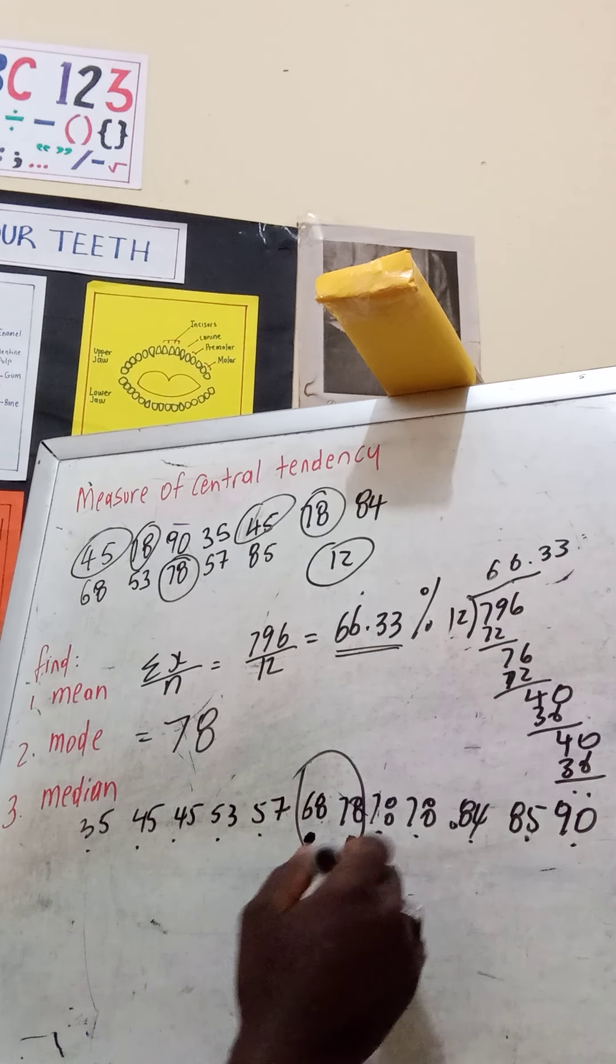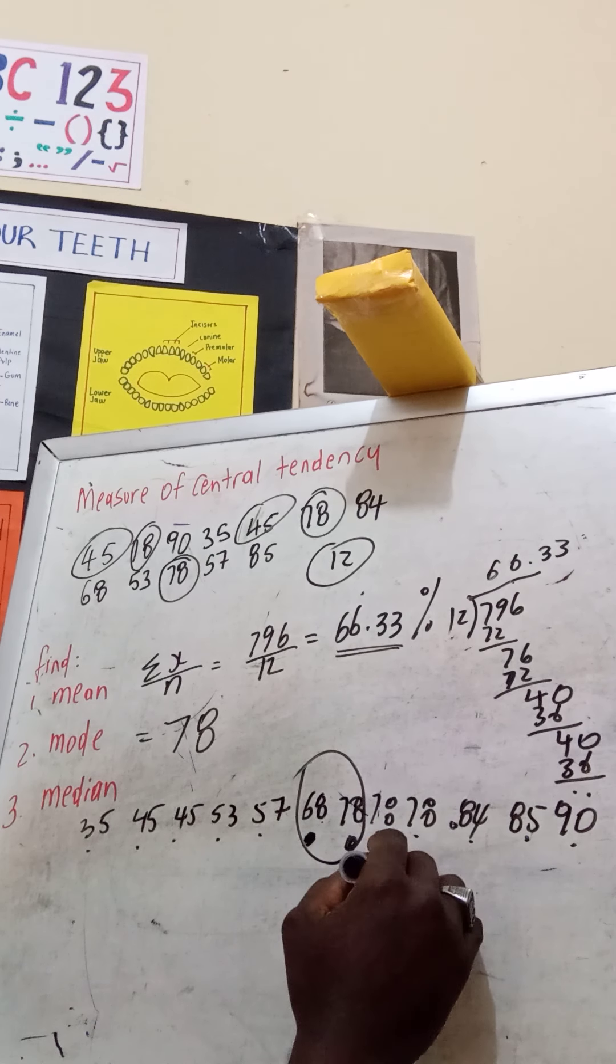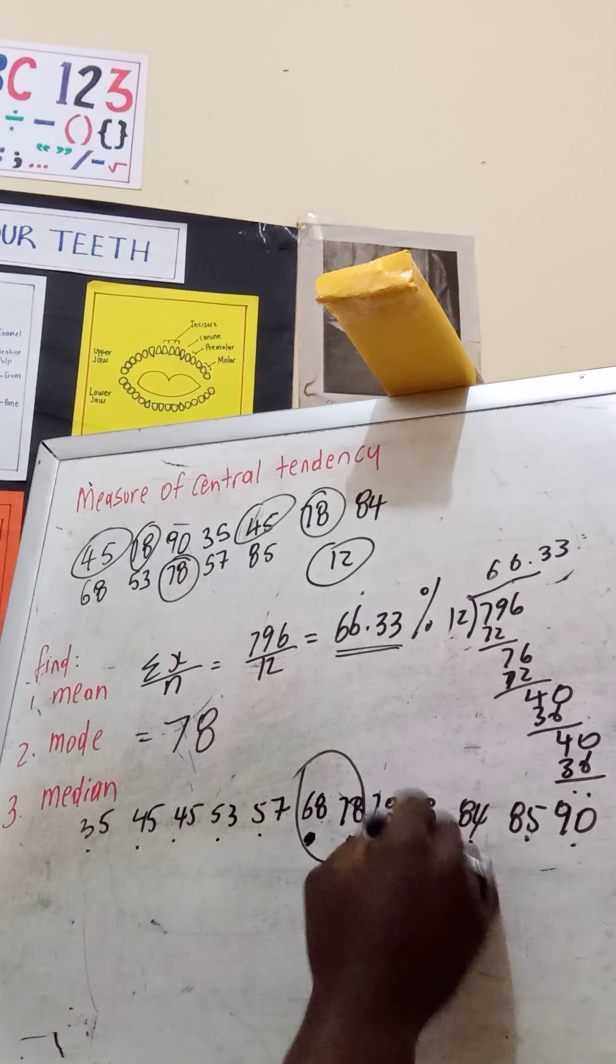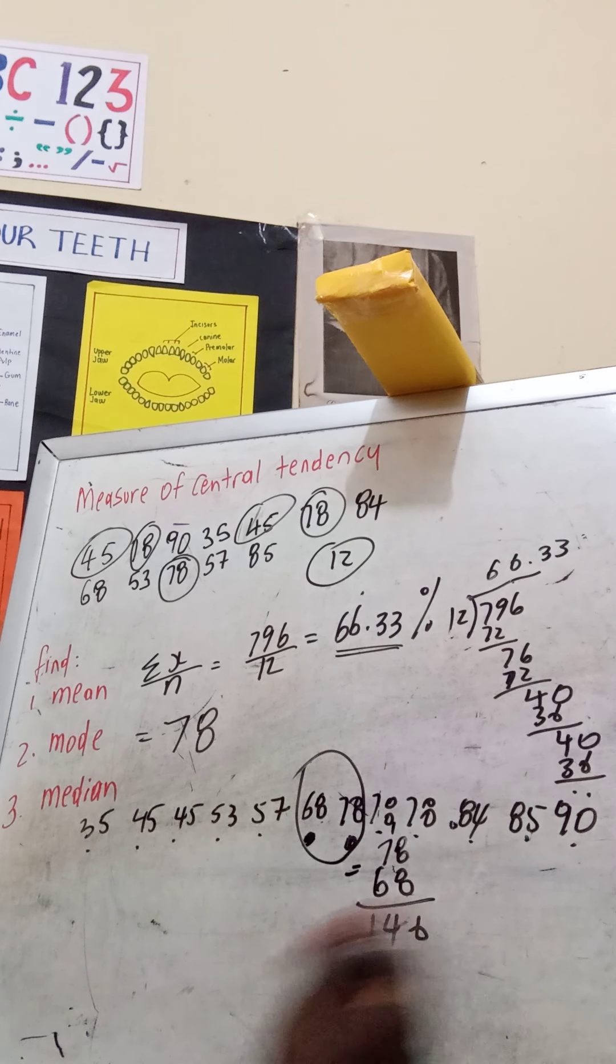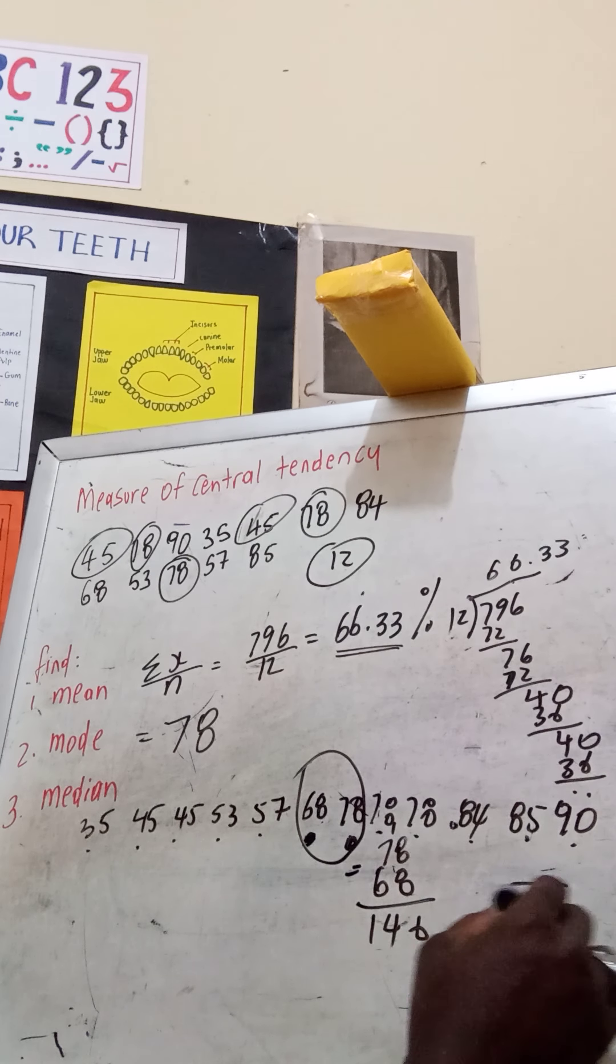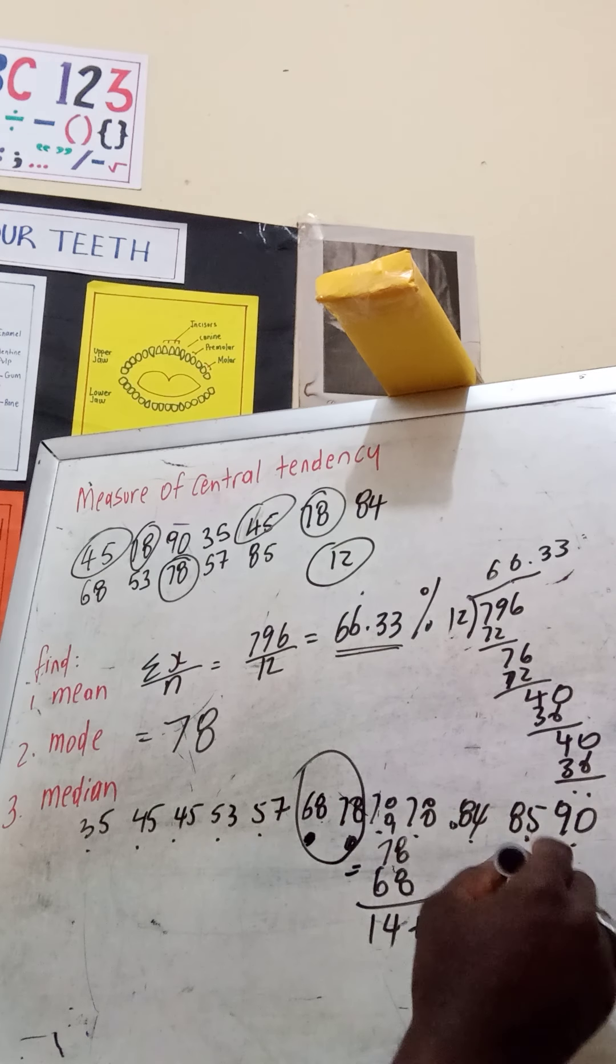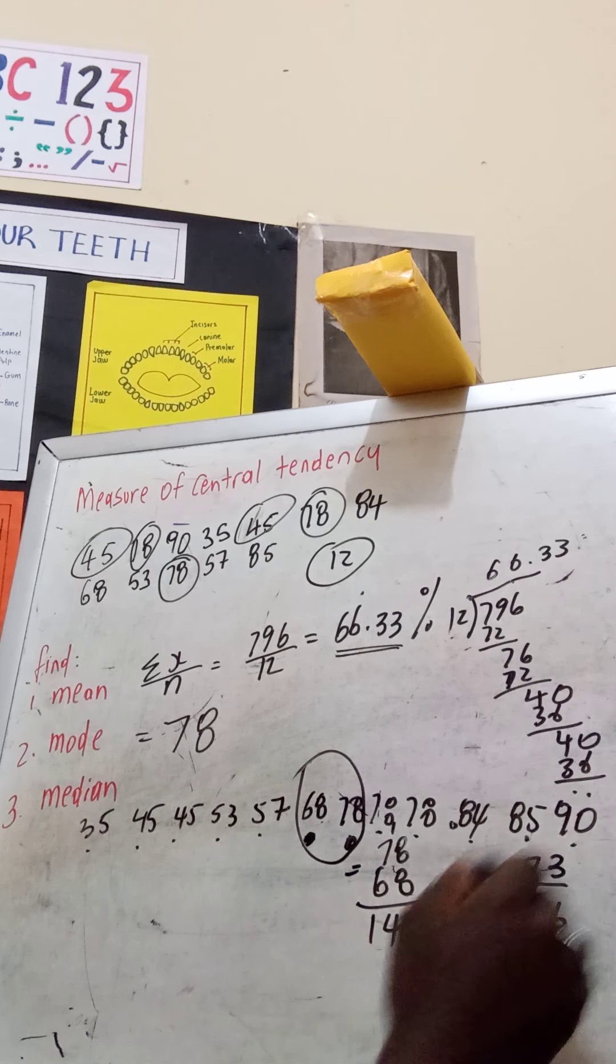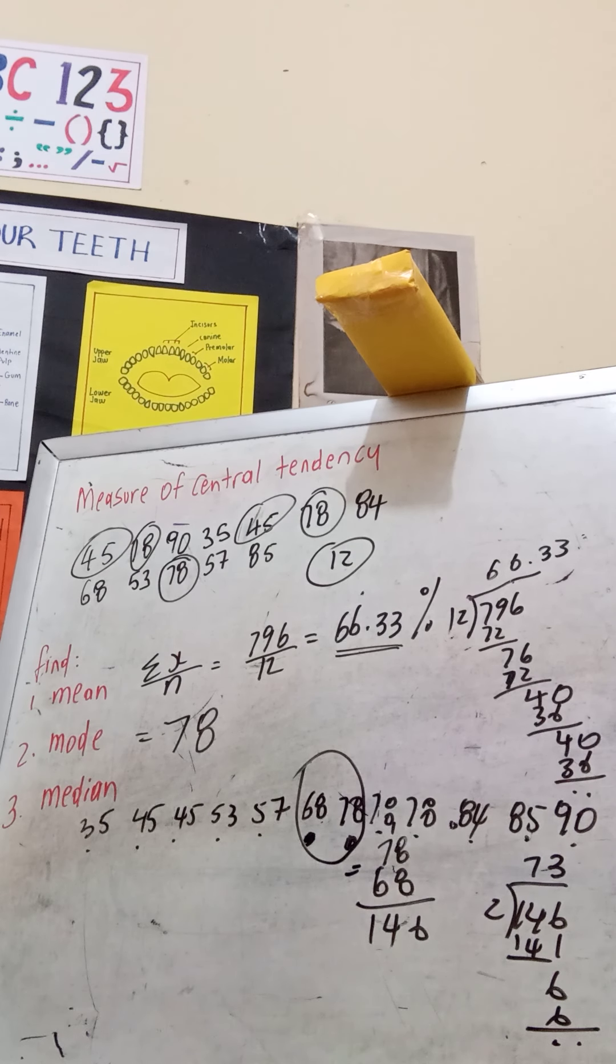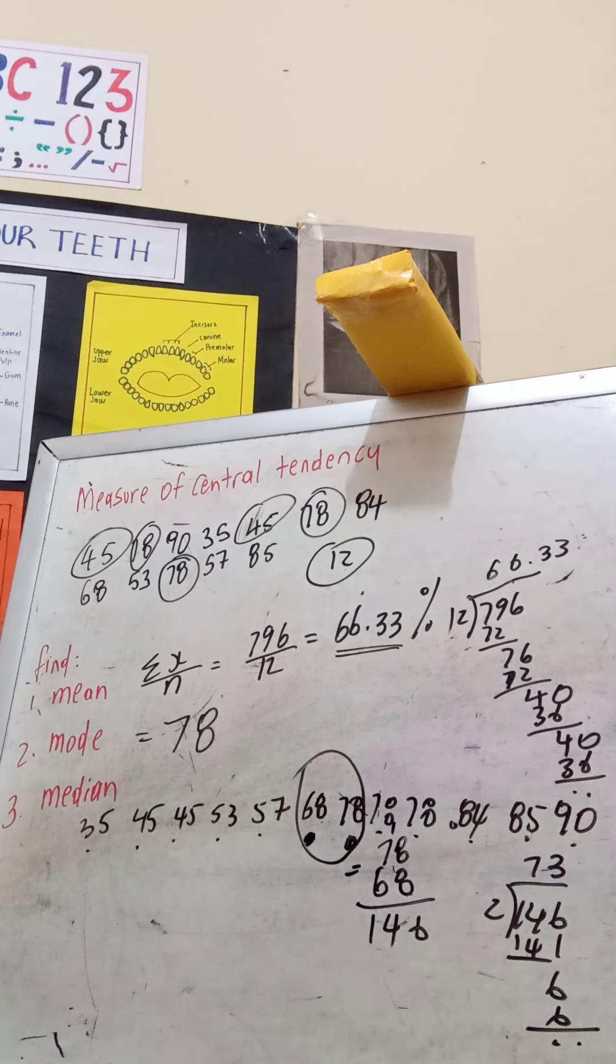I will have to add 68 and 78. 68 plus 78: 8 plus 8 is 16, carry the 1, 6 plus 7 is 13 plus 1 is 14. I have 146. I will now divide 146 by 2. 146 divided by 2: 2 into 14 is 7, bring down the 6, 2 into 6 is 3. So my median value is going to be 73.